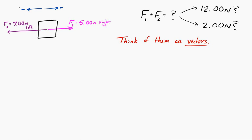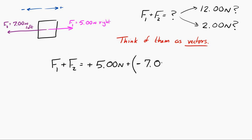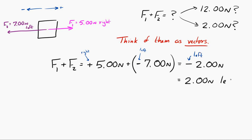If we do that, then F1 plus F2 is equal to plus 5 Newtons plus negative 7 Newtons. If we add those together, I get negative 2 Newtons. That negative sign means to the left. So we end up with 2 Newtons to the left — that is what we get when we add 5 Newtons to the right plus 7 Newtons to the left.